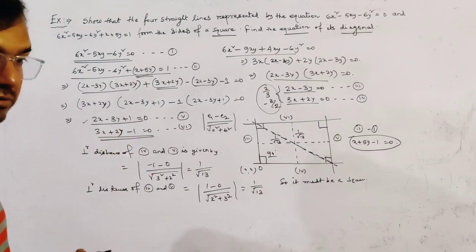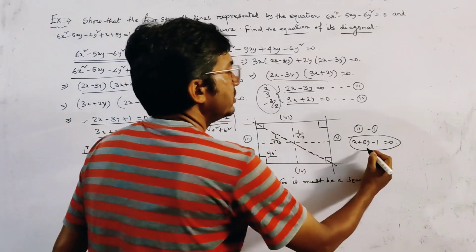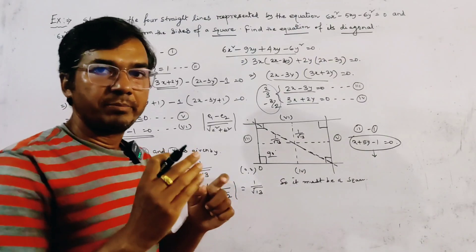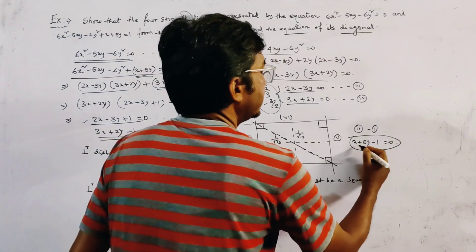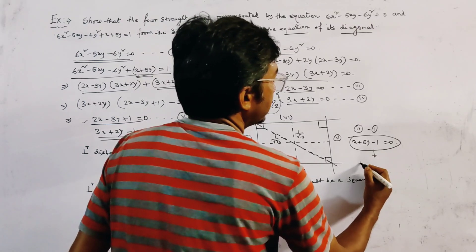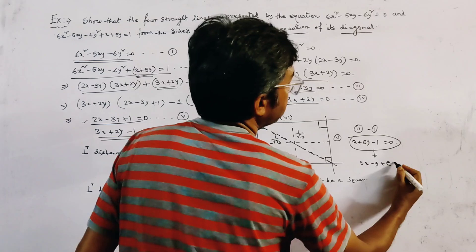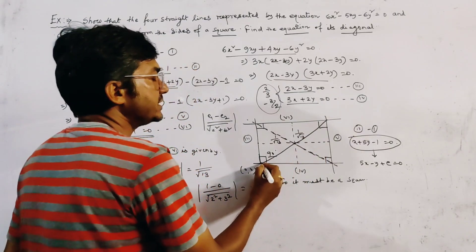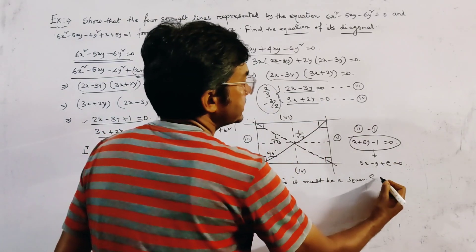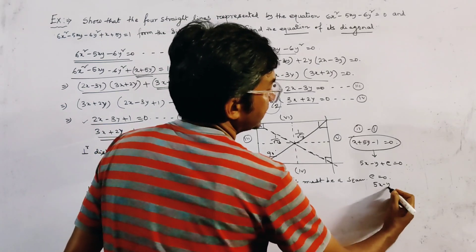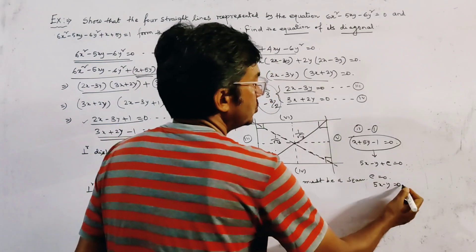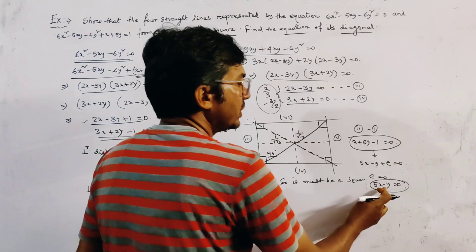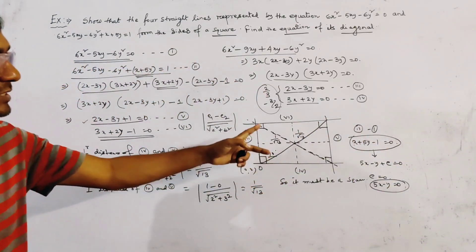To find the other diagonal, we find the line perpendicular to x + 5y - 1 = 0 passing through the origin, since diagonals of a square are perpendicular to each other. The perpendicular line has the form 5x - y + c = 0. Since it passes through the origin, c = 0, giving the second diagonal as 5x - y = 0. Therefore, the two diagonals are x + 5y - 1 = 0 and 5x - y = 0.